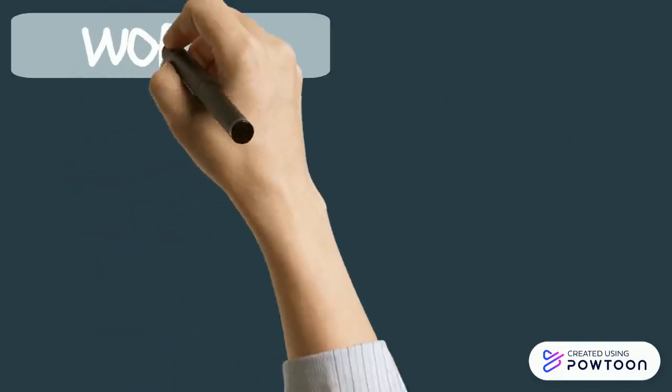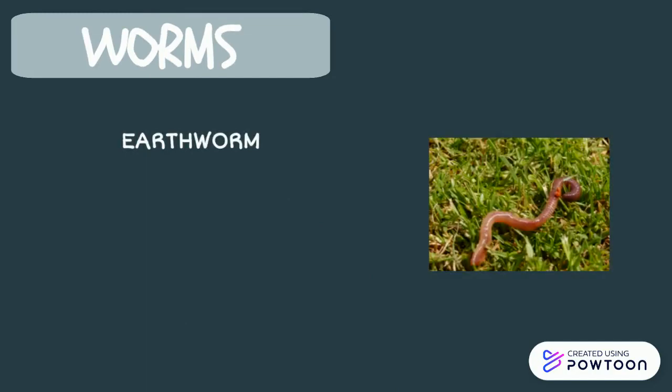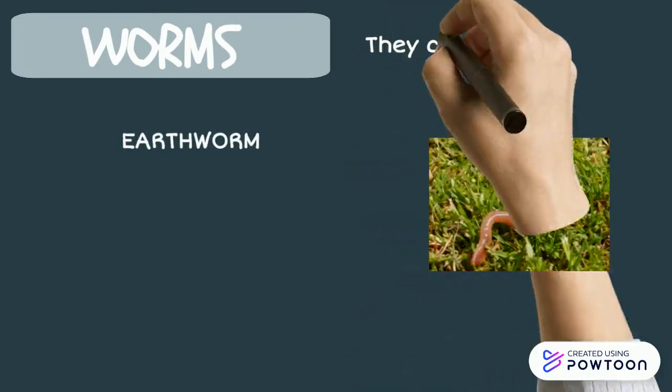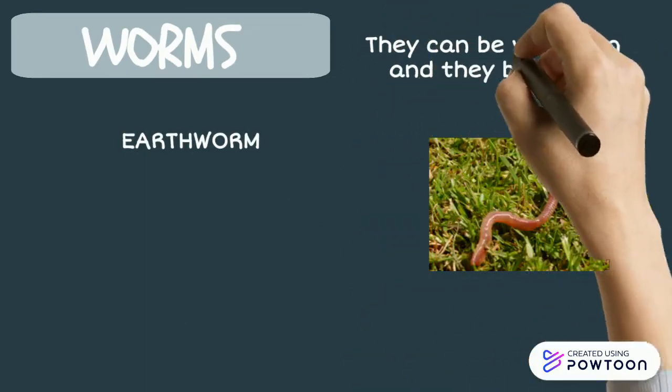Worms. There are lots of different types of worms but the most common worm is the earthworm. They can be very long and they breathe through their skin.